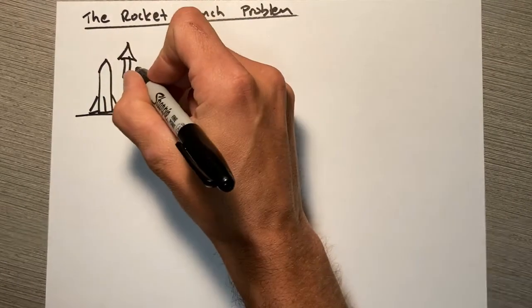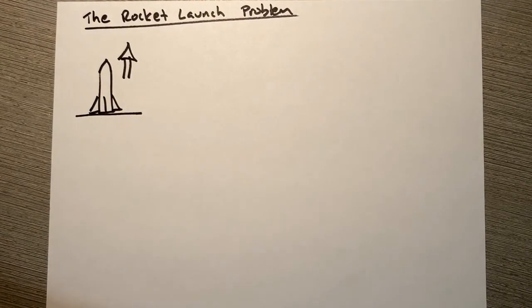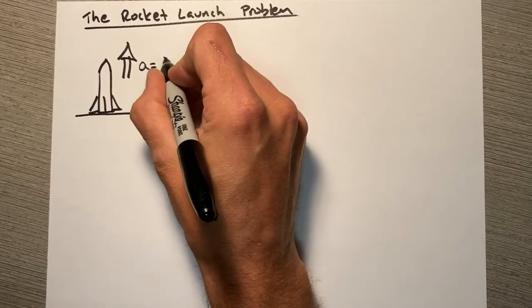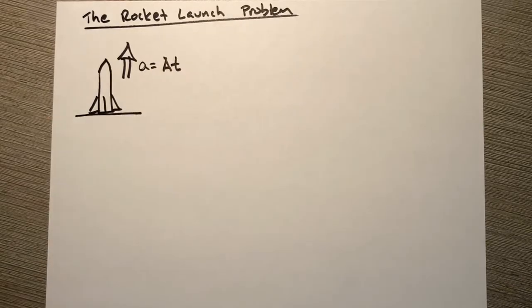It's going to accelerate at some rate that is not constant, so acceleration is going to be given by a function of some constant multiplied by time. Our goal is to determine how high and how fast this rocket could be traveling at any point in time later.